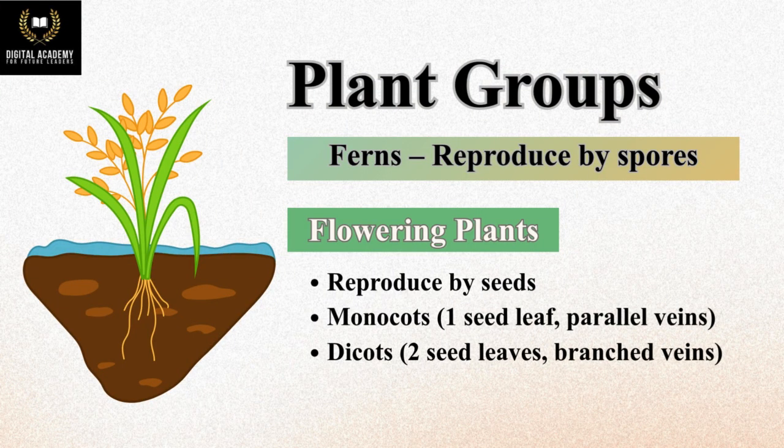Plant groups: Ferns – reproduce by spores; Flowering plants – reproduce by seeds. Monocots: one seed leaf, parallel veins. Dicots: two seed leaves, branched veins.